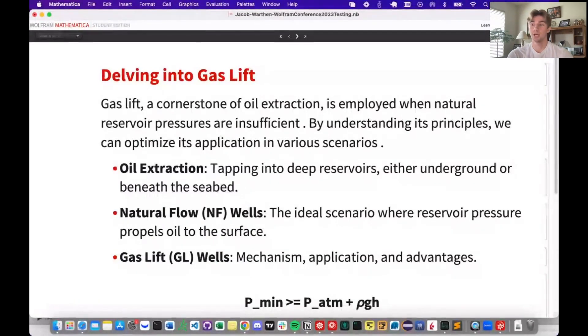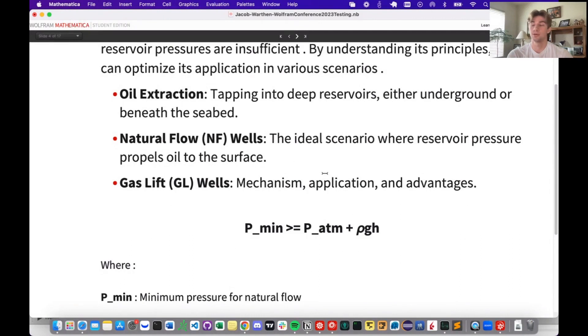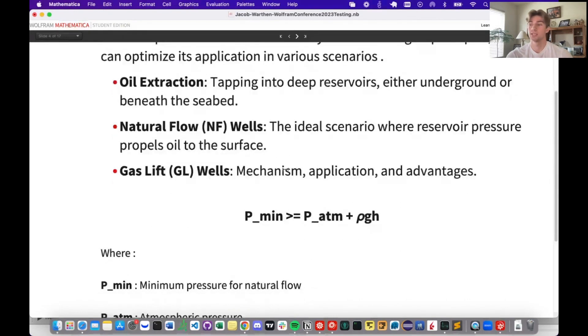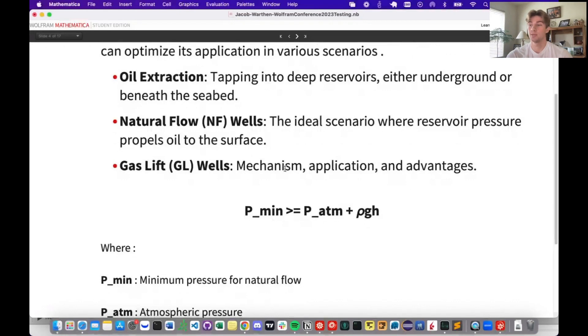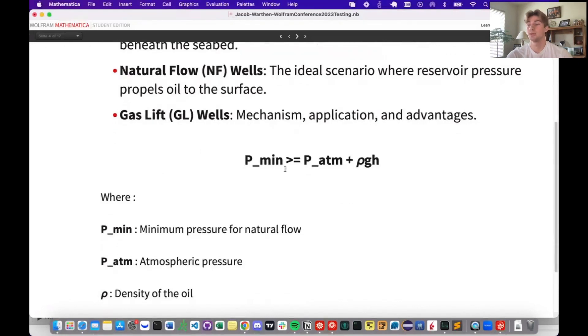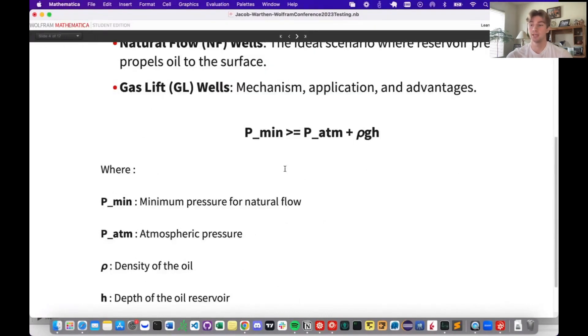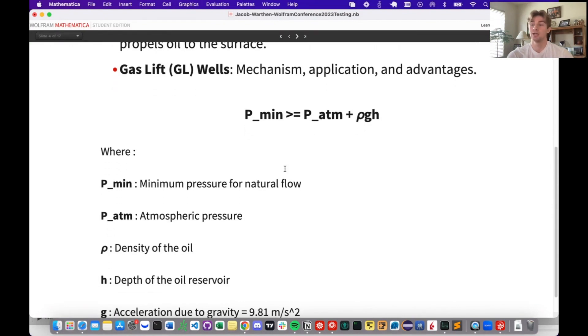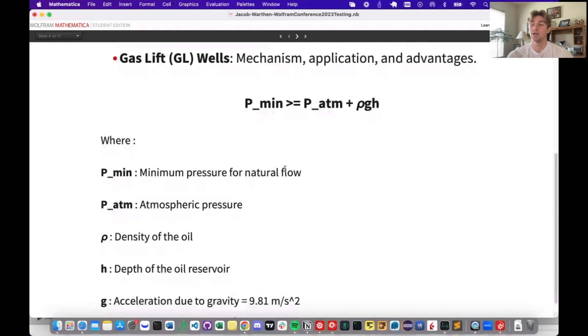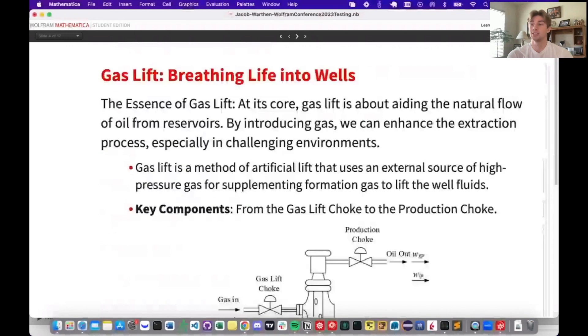But not all reservoirs play along. Sometimes the natural pressures are just not enough. Enter gas lift wells. With gas lift, we artificially introduce gas into the oil well. This reduces the density of the fluid column, creating enough buoyancy for the oil to ascend. Think of it as giving the oil a gentle nudge, guiding it upwards. Here's a simple formula that captures the essence of this: Pmin representing the minimum pressure needed for natural flow, PATM standard atmospheric pressure, ρ oil's density, H the depth of the reservoir, and G gravitational constant. Gas lift is not just about extracting oil, it's about doing it efficiently. Gas lift is akin to giving wells a second breath of life, ensuring their potential and maximizing the extraction of the black gold beneath.